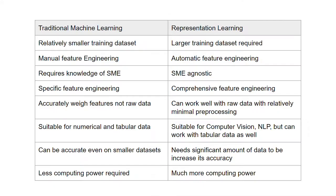Let us now summarize the differences between the two. A traditional machine learning algorithm can work on a relatively smaller data set. However, representation learning algorithms require a larger training data set.